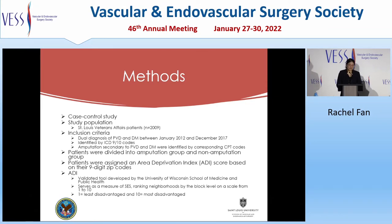We conducted a case-control study. Our study population included 2,009 St. Louis Veterans Affairs patients identified by ICD-9 and ICD-10 codes for a dual diagnosis of peripheral vascular disease and diabetes mellitus between January 2012 and December 2017. We divided patients into an amputation group and non-amputation group based on whether they had corresponding CPT codes for major lower limb amputation after dual diagnosis. Patients who received an amputation secondary to trauma, lymphatic disease, and malignancy were excluded.